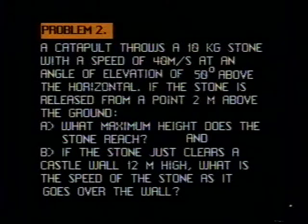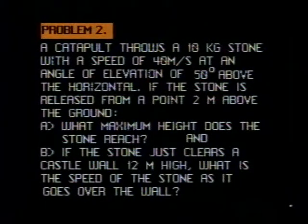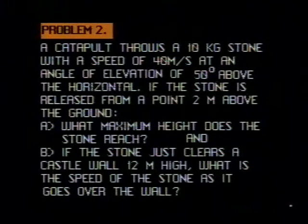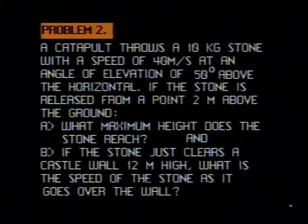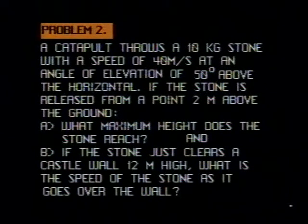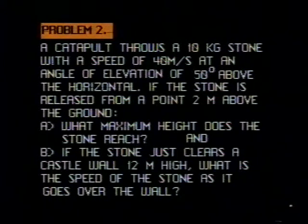Problem two: a catapult throws a 10-kilogram stone with a speed of 40 meters per second at an angle of elevation of 50 degrees above the horizontal. If the stone is released from a point two meters above the ground, what maximum height does the stone reach, and if the stone just clears a castle wall 12 meters high, what is the speed of the stone as it goes over the wall?